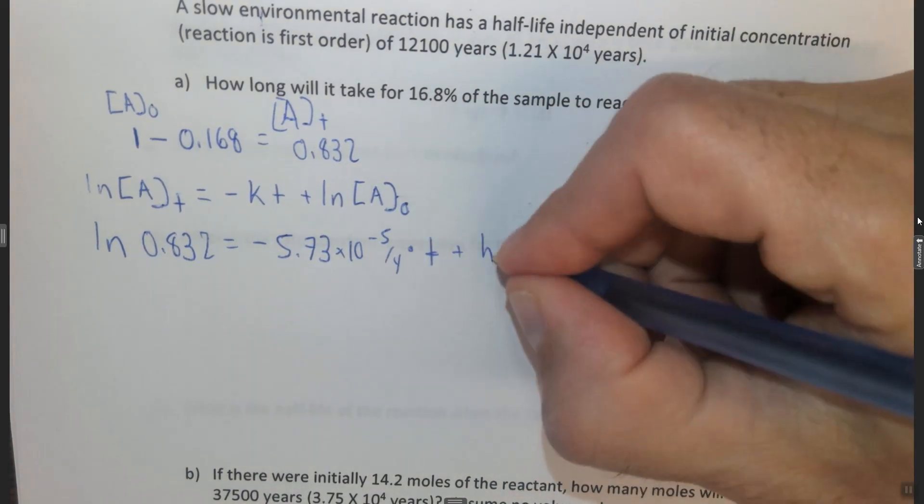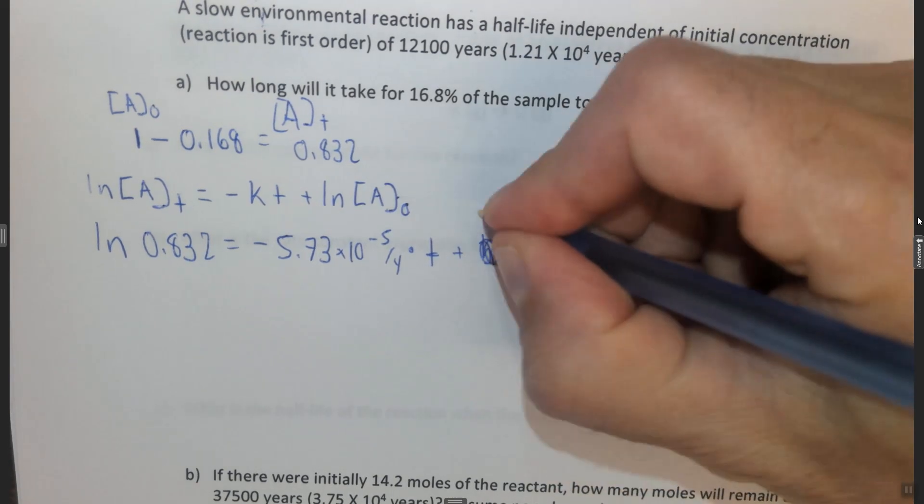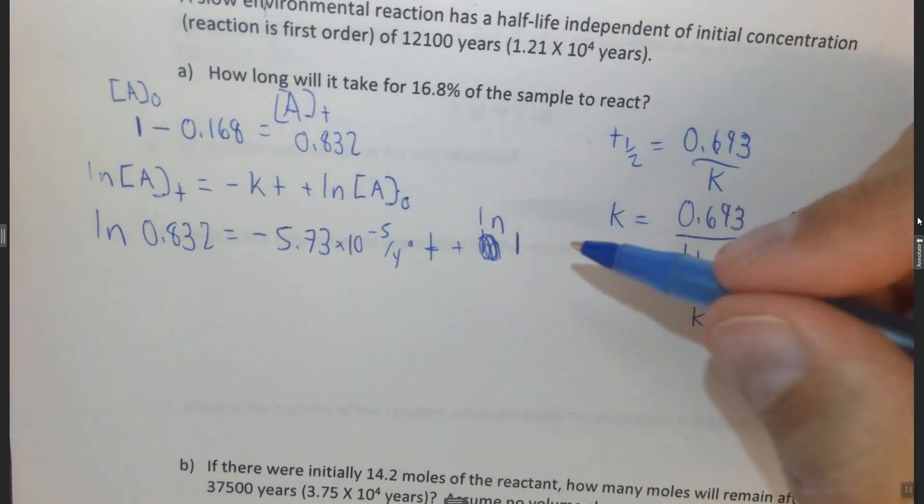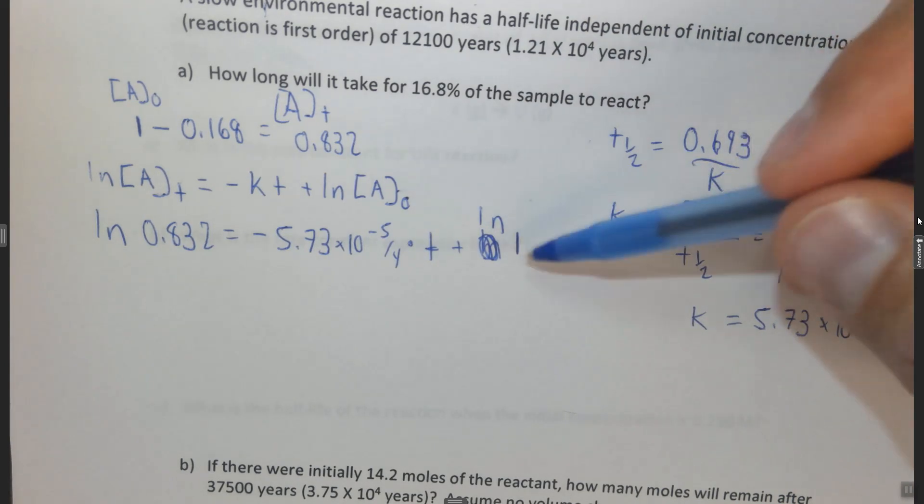plus the ln of 1, which is the initial concentration. The advantage of using 1 here is the ln of 1 is 0, so this just goes.